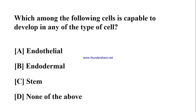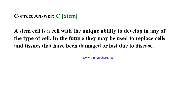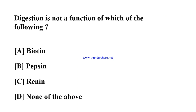Which among the following cells is capable of developing into any type of cell? A) Endothelial, B) Endodermal, C) Stem, D) None of the above. Correct answer: C) Stem. A stem cell is a cell with the unique ability to develop into any type of cell. In the future, they may be used to replace cells and tissues that have been damaged or lost due to disease.